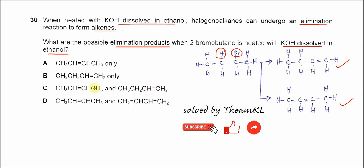Therefore, the answer is not A, because A lists only but-2-ene and but-1-ene separately — that's incomplete. The answer is C: both but-2-ene and but-1-ene are formed. This other option cannot be correct. Answer is C. That's all, thank you.